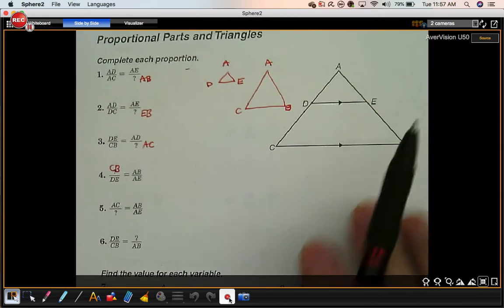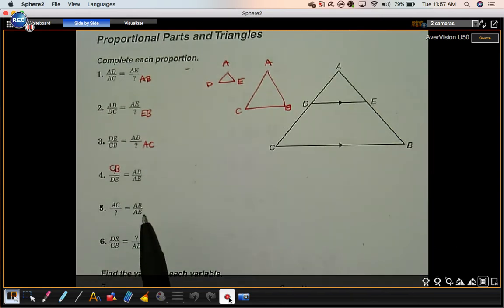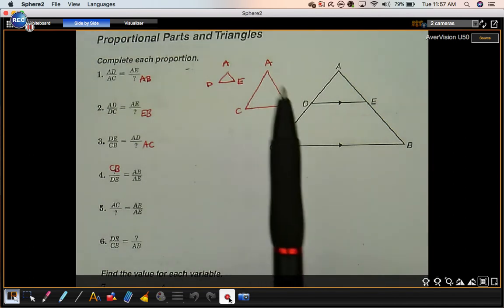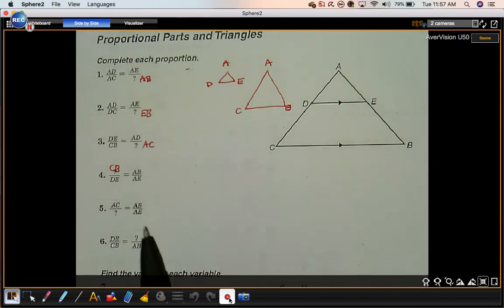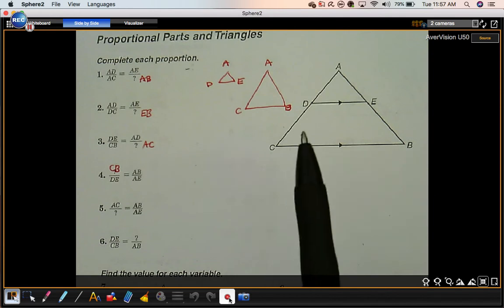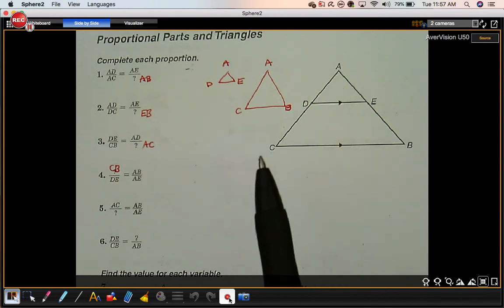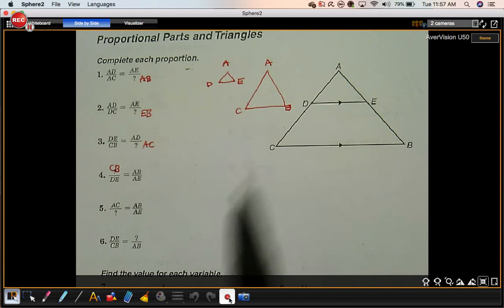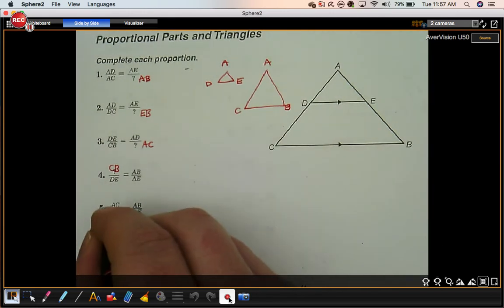Number 5. Same ratio that we have over here. Notice, right side to right side, that's going to equal A to C. That's the left side, to this left side, A to D.